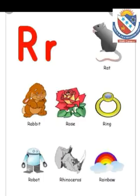The sound of R is R. Words that start with R: Rat, Rabbit, Rose, Ring, Robot, Rhinoceros, Rainbow.